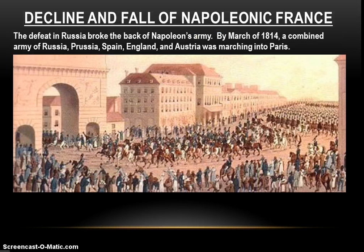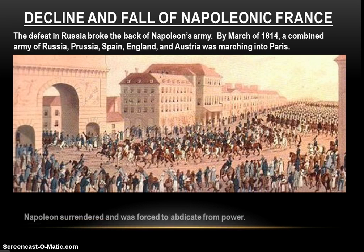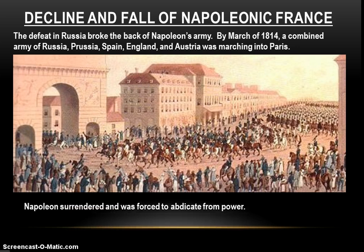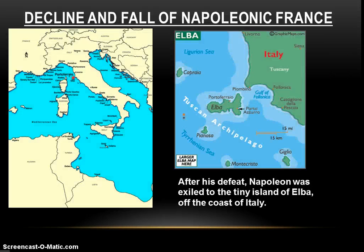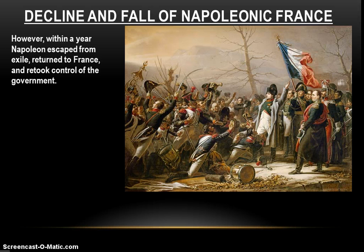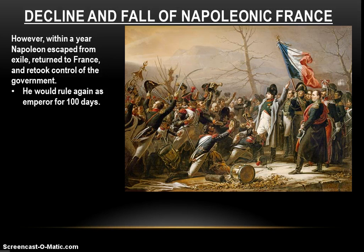The defeat in Russia broke the back of Napoleon's army. By March of 1814, a combined army of Russia, Prussia, Spain, England, and Austria was marching into Paris. Napoleon surrendered and was forced to abdicate from power. After his defeat, he was exiled to the tiny island of Elba off the coast of Italy — but he wouldn't stay there very long. Within a year, Napoleon escaped from exile, returned to France, and retook control of the French government. He would reign again as emperor, but only for 100 days.